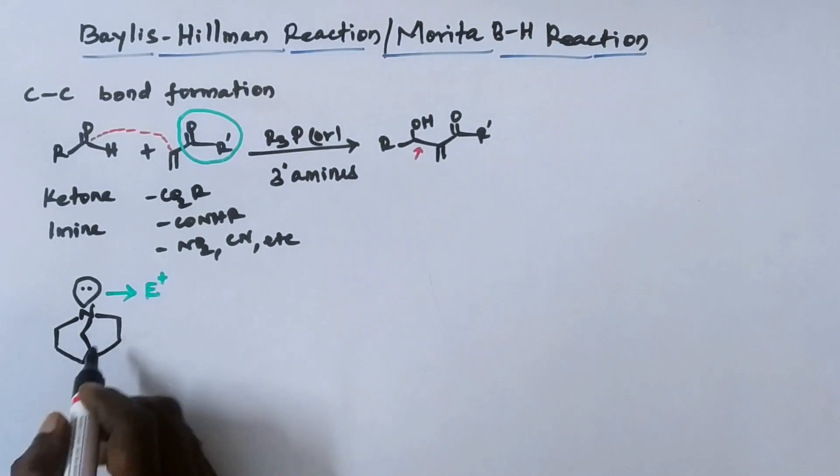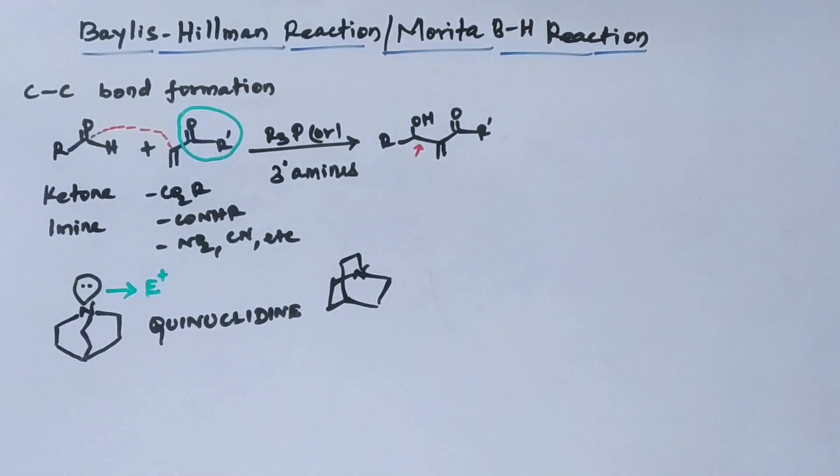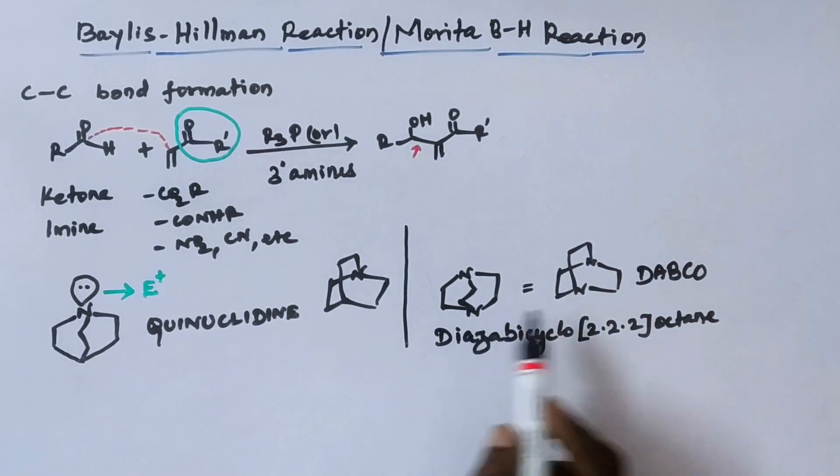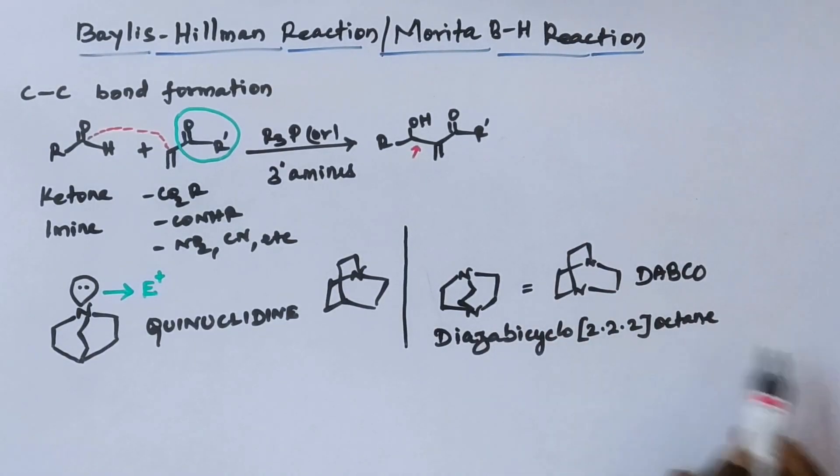This nitrogen lone pair is freely exposed to the electrophile. So the name of this base is quinuclidine. And we can use one more base similar to that. It is DABCO. Diazabicyclo[2.2.2]octane. This sort of bases are preferred for Baylis-Hillman reaction.